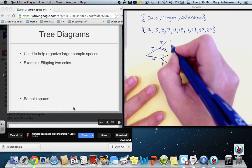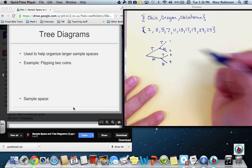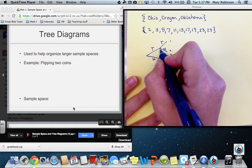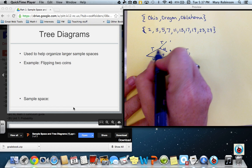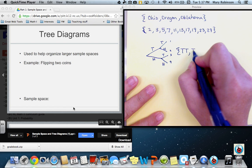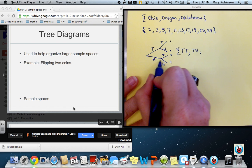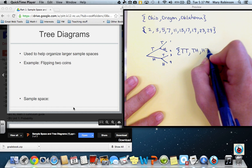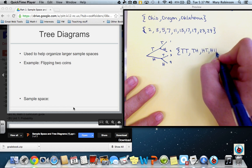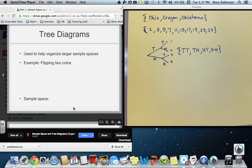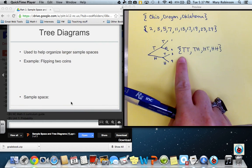Therefore, there are 1, 2, 3, 4 possible outcomes. Tails then tails, tails then heads, heads tails, and heads heads. And this would be our sample space.